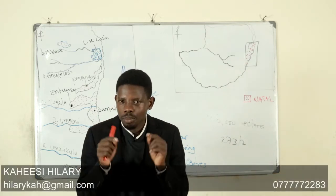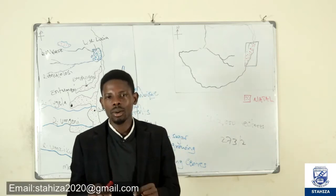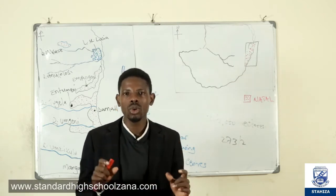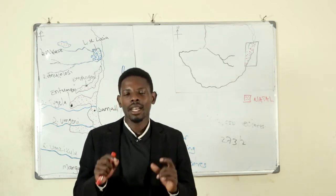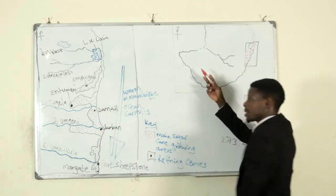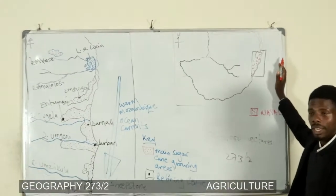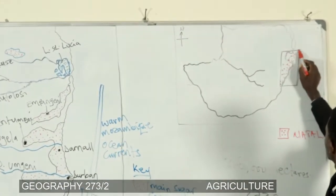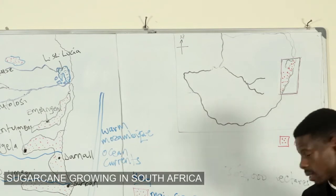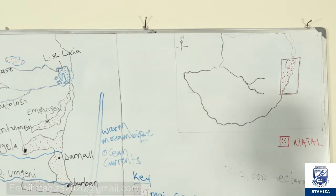What is being grown in South Africa? It is sugarcane — that is the crop. Where is sugarcane grown in South Africa? Sugarcane in South Africa is grown in Kwazulu-land in Natal province. Check on this map — this is a simple sketch map of South Africa. This part in the extreme east is Kwazulu-land, the Natal province. Where I have put red dots, using the key, that is the Natal province — that is where sugarcane growing is done.